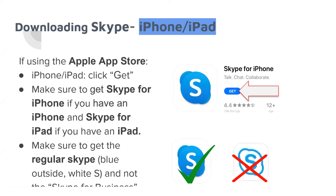For downloading Skype on iPhone or iPad, if you are an iPhone or iPad user, use the Apple App Store and click Get, since Android and iPhone functions are different. Make sure that you have downloaded the regular Skype, not the Skype for Business account.